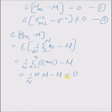Hence, the maximum likelihood estimate of the mean is an unbiased estimate. Now we discuss the second property — that the maximum likelihood estimate of the variance is a biased estimate.